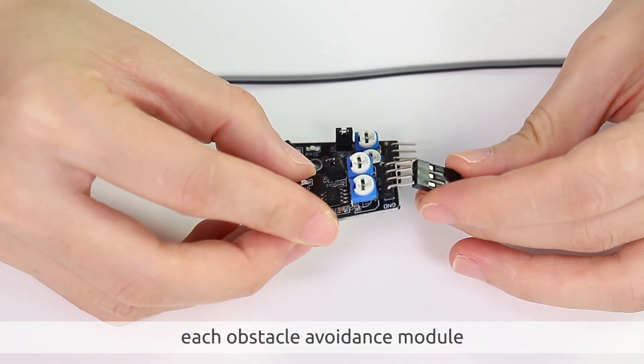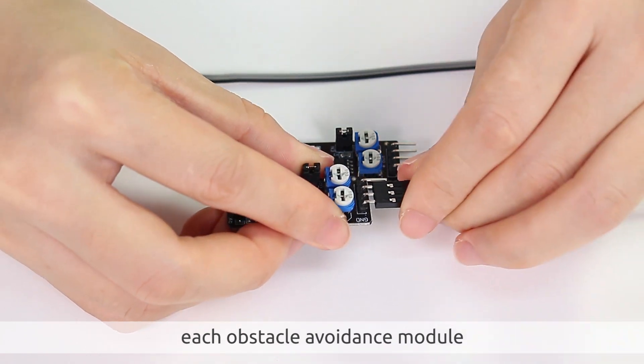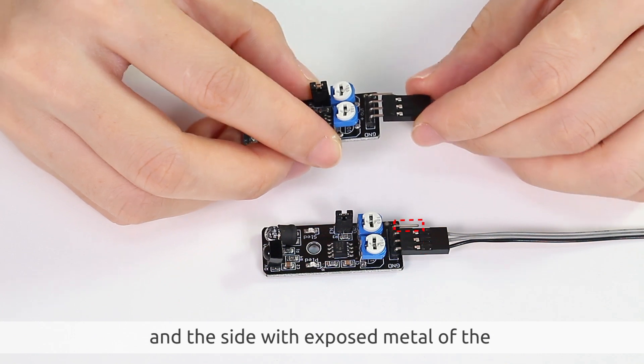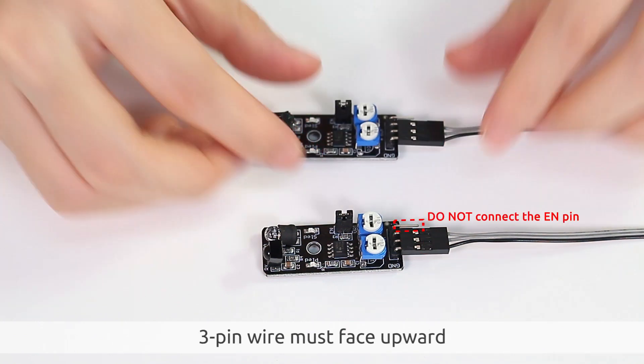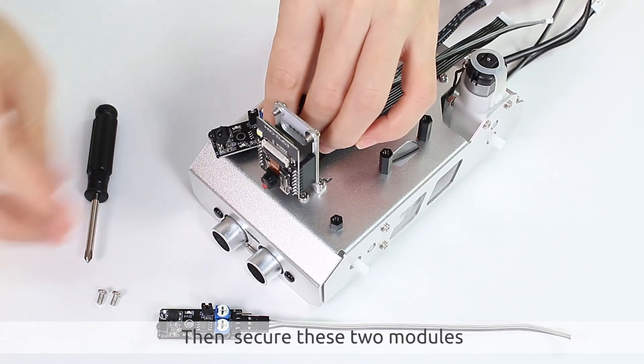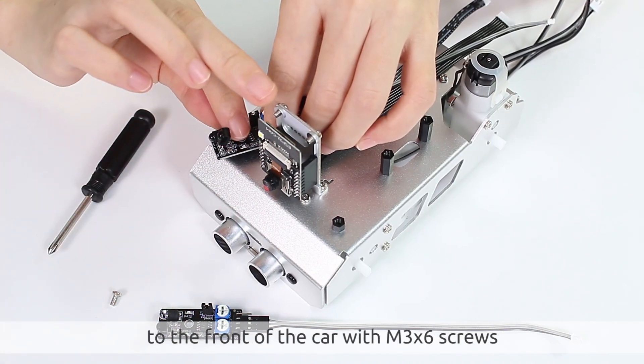Insert a three-pin wire into each obstacle avoidance module, making sure not to connect the end pin. The side with exposed metal of the three-pin wire must face upward. Then secure these two modules to the front of the car with M3 x 6 screws.